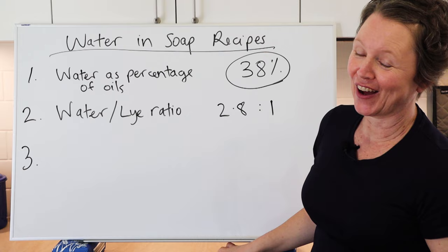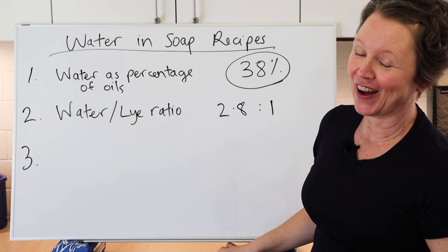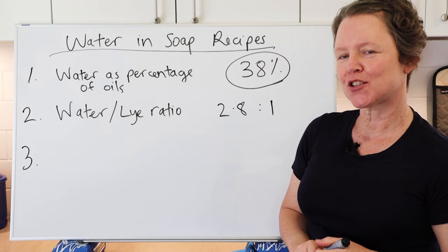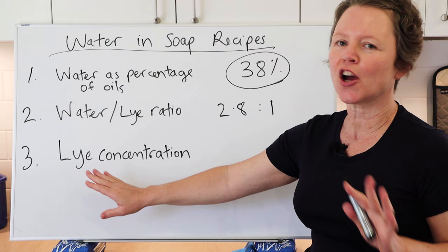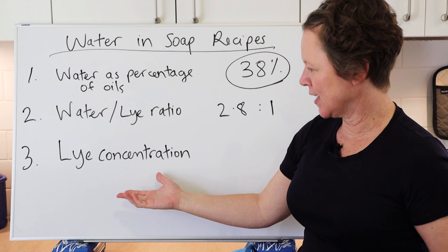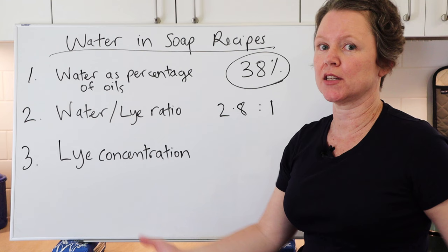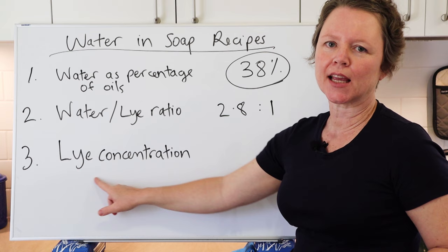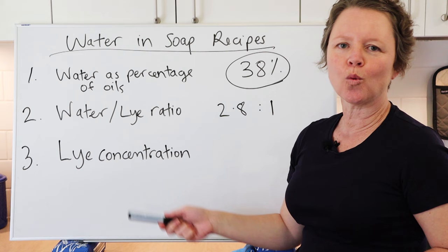The third way — and this is the way I use, which is probably what caused the confusion — is the lye concentration method. I can totally understand why, when you see that term in the context of calculating a soap recipe, you might think it refers to how much lye is in the soap recipe. But that's not the case at all.